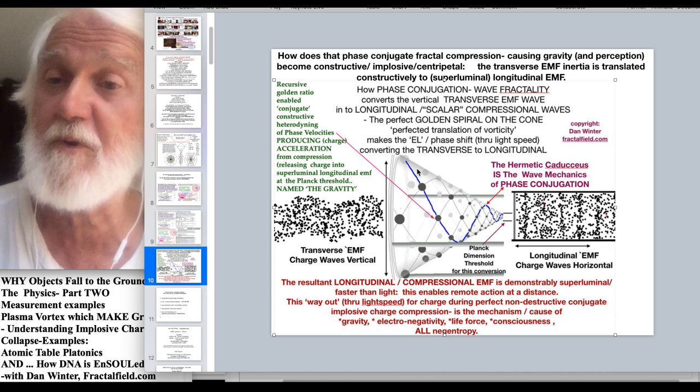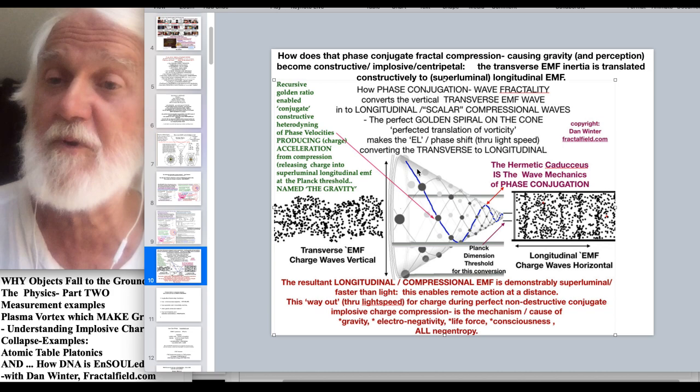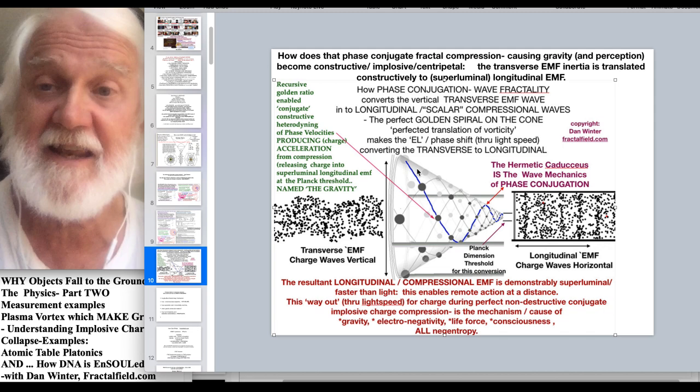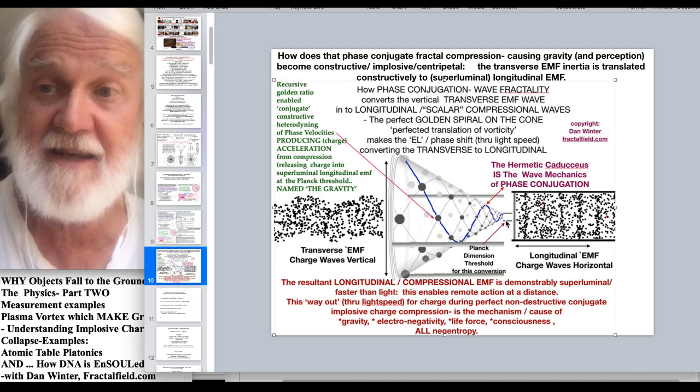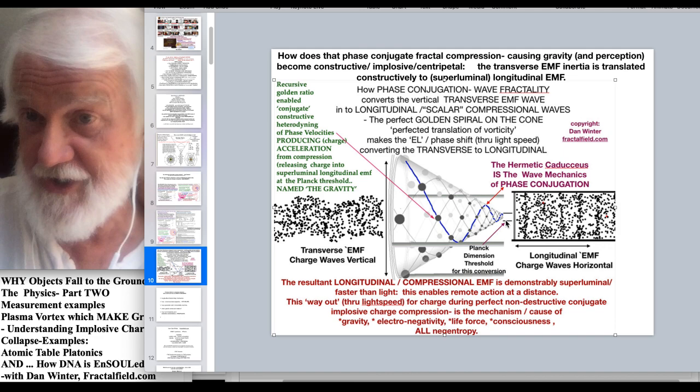So when physics says that these wormholes are created by nesting embeddability what they mean is that golden ratio phase conjugation enables the creation of the longitudinal wave in the wave distribution geometry which is specifically fractal golden ratio which is the gravity grid which introduces our next conversation here which is a review of